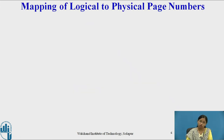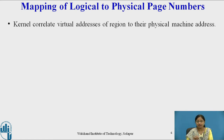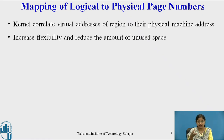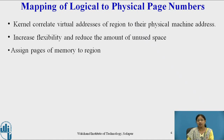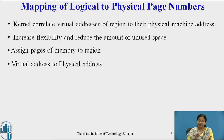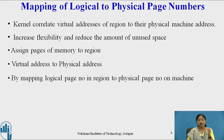Now let us see the mapping of logical to physical page numbers. When the kernel assigns physical pages of memory to a region, it need not assign pages continuously or in any particular order. The purpose of page memory is to give greater flexibility and reduce the amount of unused space. The kernel correlates the virtual address of a region to its physical machine address. This address translation is done by mapping the logical page number in a region to the physical page number on the machine.